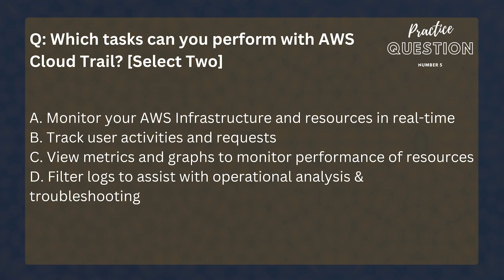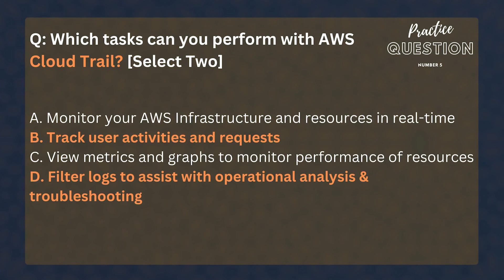Which tasks can you perform with AWS CloudTrail? Select two answers. Monitor your AWS infrastructure and resources in real time, track user activities and requests, view metrics and graphs to monitor performance of resources, filter logs to assist with operational analysis and troubleshooting. The answer is B and D. CloudTrail is a service that helps you collect user activity logs and filter and search across them for troubleshooting and analysis.